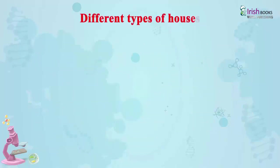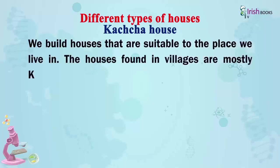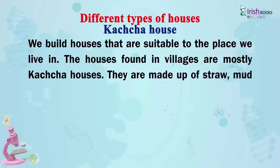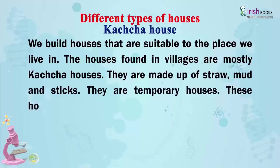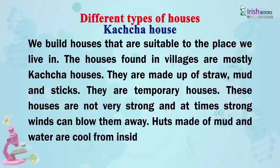Different types of houses. Kaccha house. We build houses that are suitable to the place we live in. The houses found in villages are mostly kaccha houses. They are made of straw, mud and sticks. They are temporary houses. These houses are not very strong and at times strong winds can blow them away. Walls made of mud and water are cool from inside in summer.